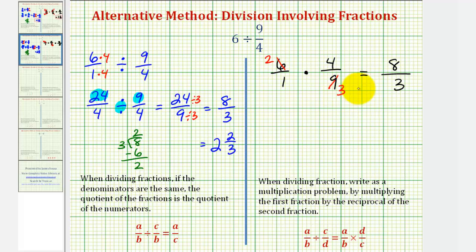Notice how for both quotients we have 8 thirds, which is also equal to 2 and 2 thirds. So obviously both quotients are the same. It's really up to you to decide which method works best for you. I hope you found this example helpful.